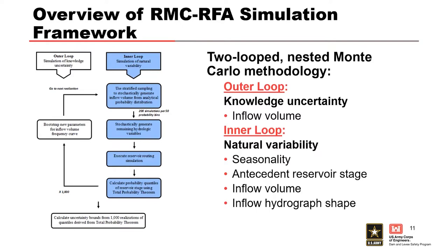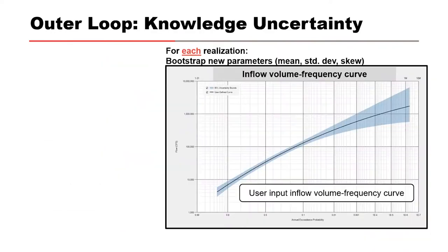Instead of using fixed values, RMCRFA treats four variables as random variables, including the seasonal occurrence of the flood event, the antecedent reservoir stage, inflow volume, and the inflow hydrograph shape. In the next several slides, I will go through each step of the two-loop simulation process.